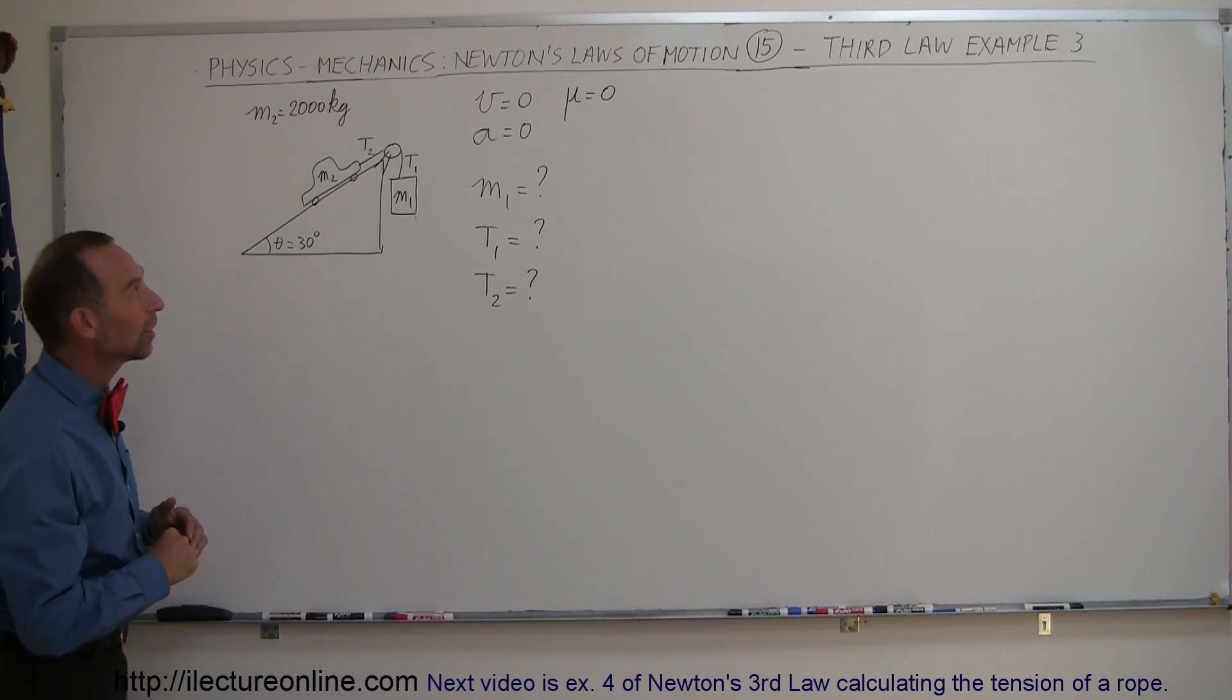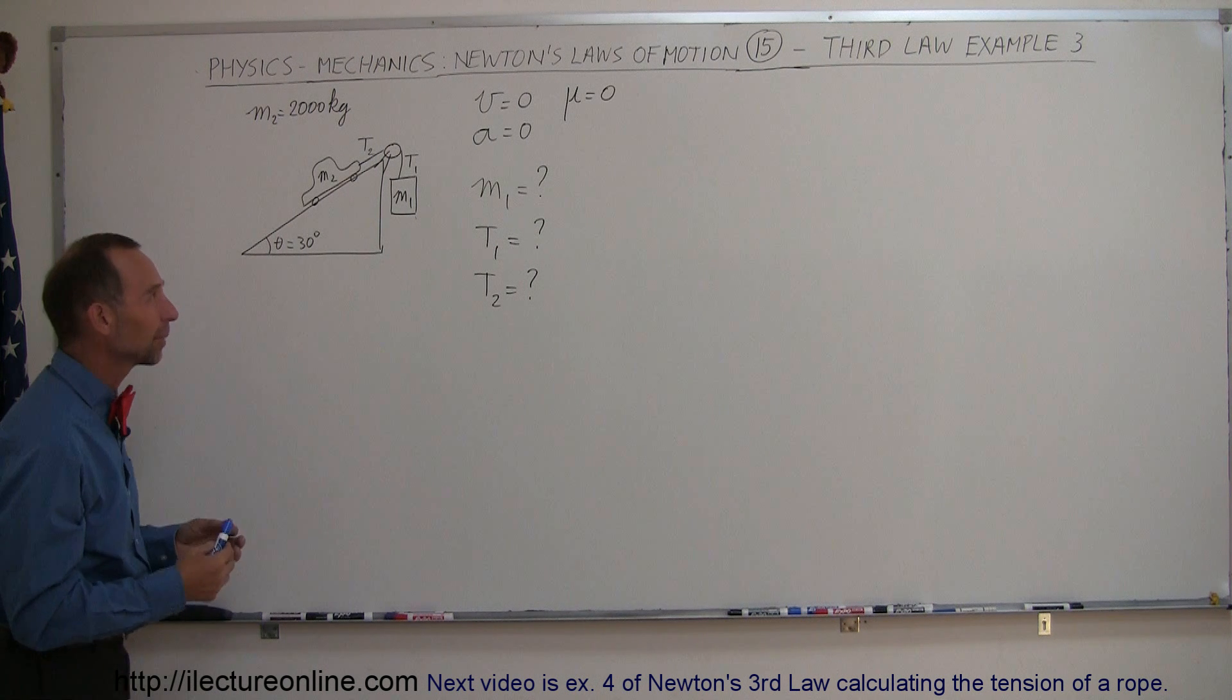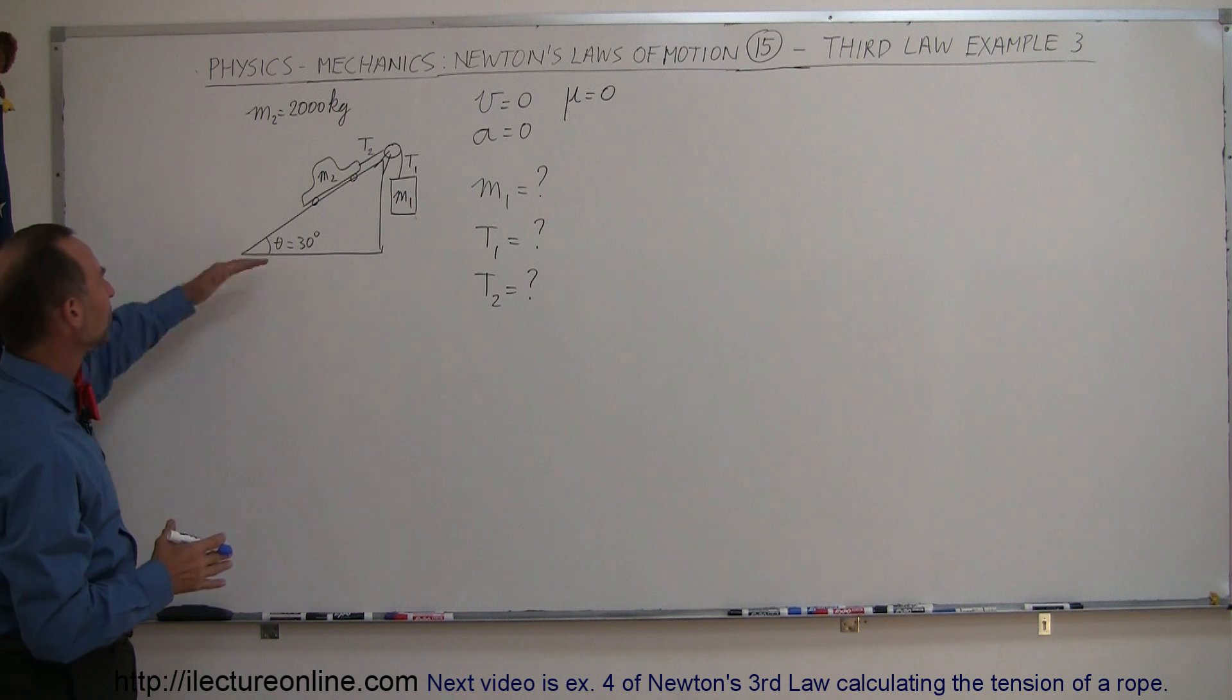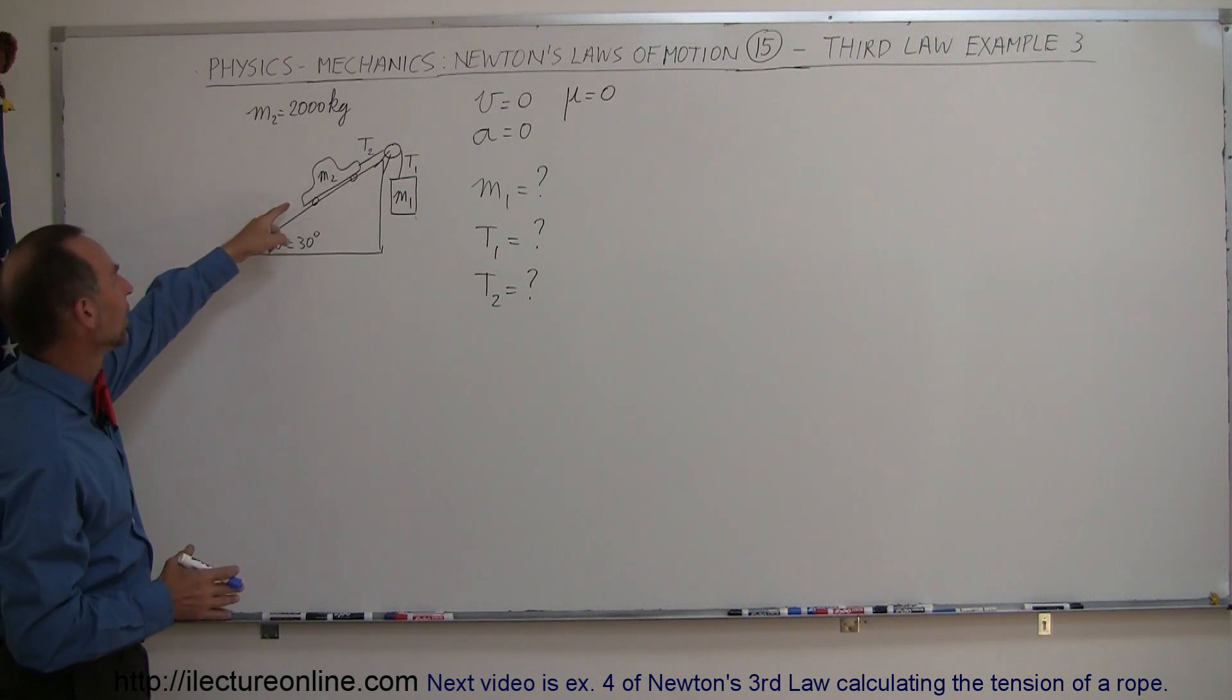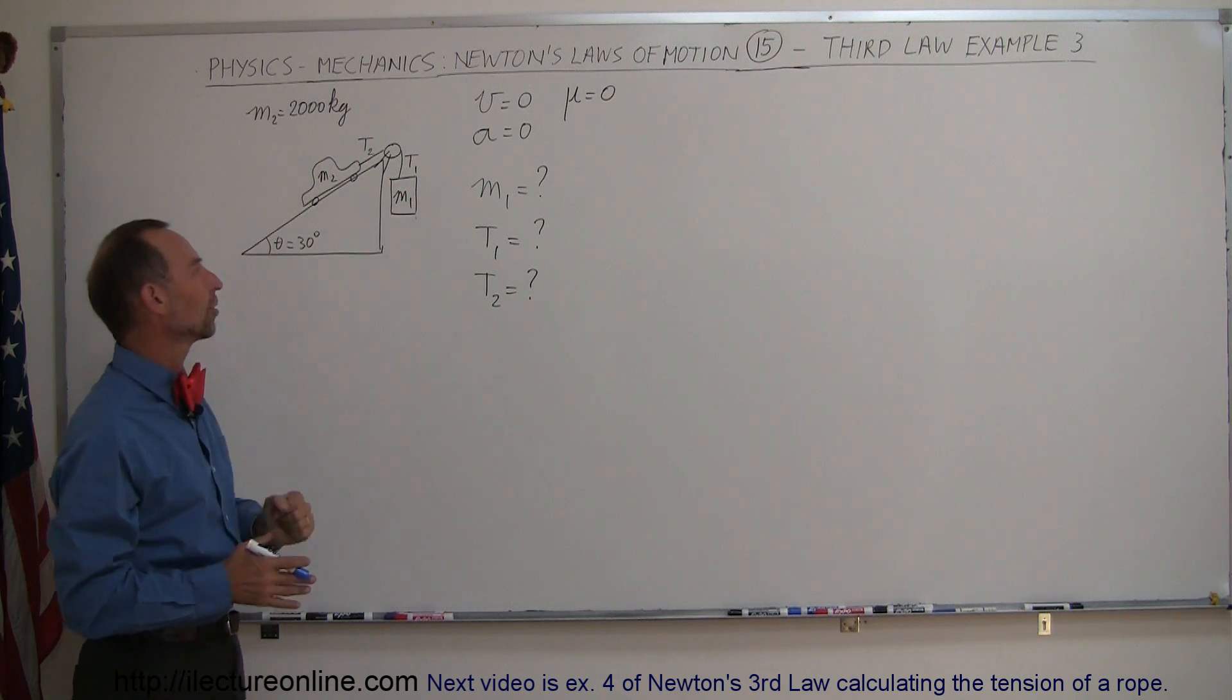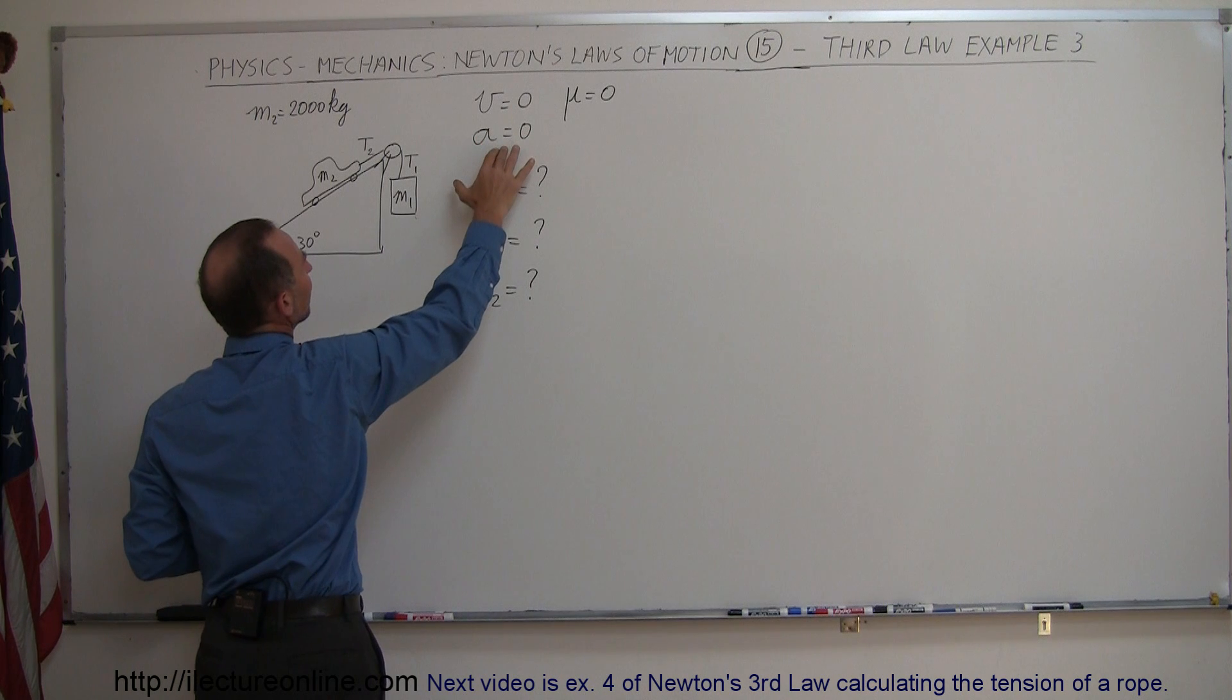Here's our next example for utilizing Newton's third law, and usually Newton's first and second law typically falls in there as well. On this particular problem, we have a wedge-shaped object with a car on one side attached to a cable over a pulley, and there's a weight on the other side, keeping everything in balance. Notice that nothing is moving and nothing is accelerating.